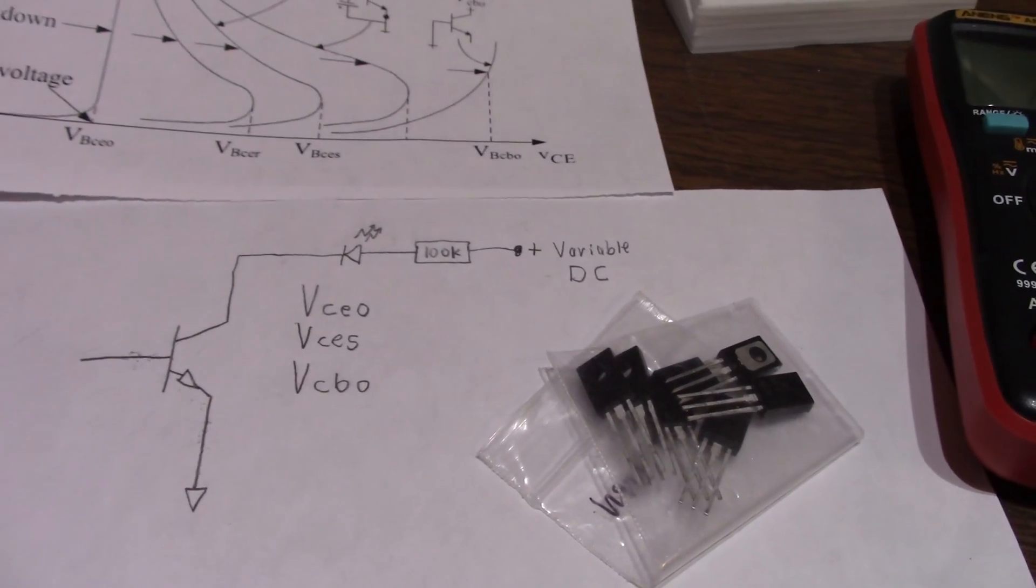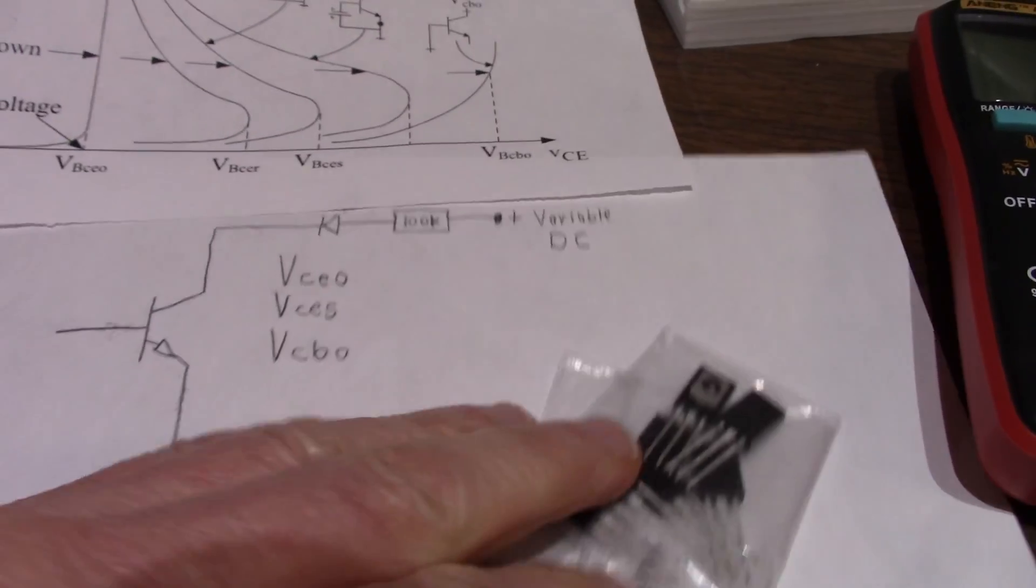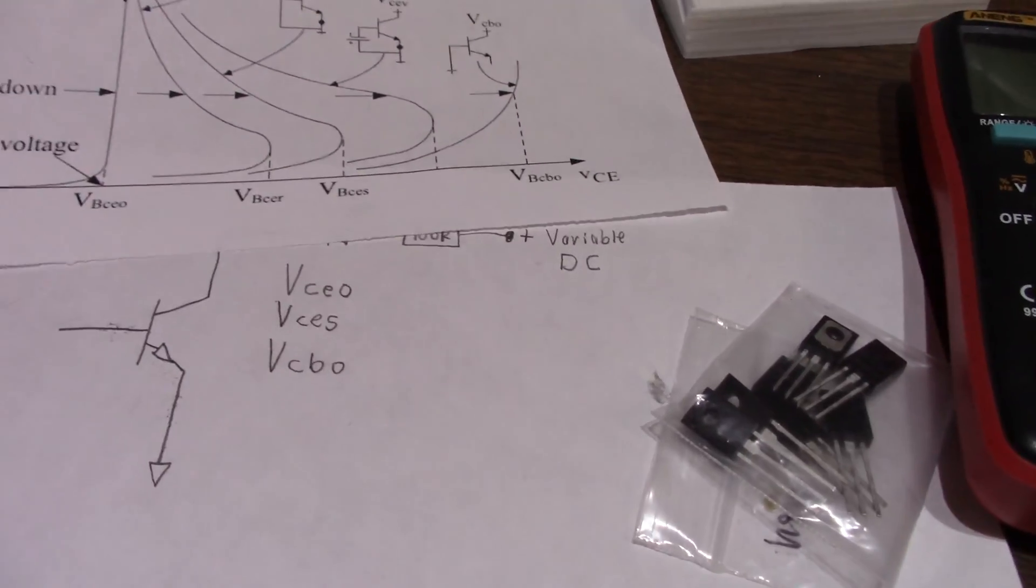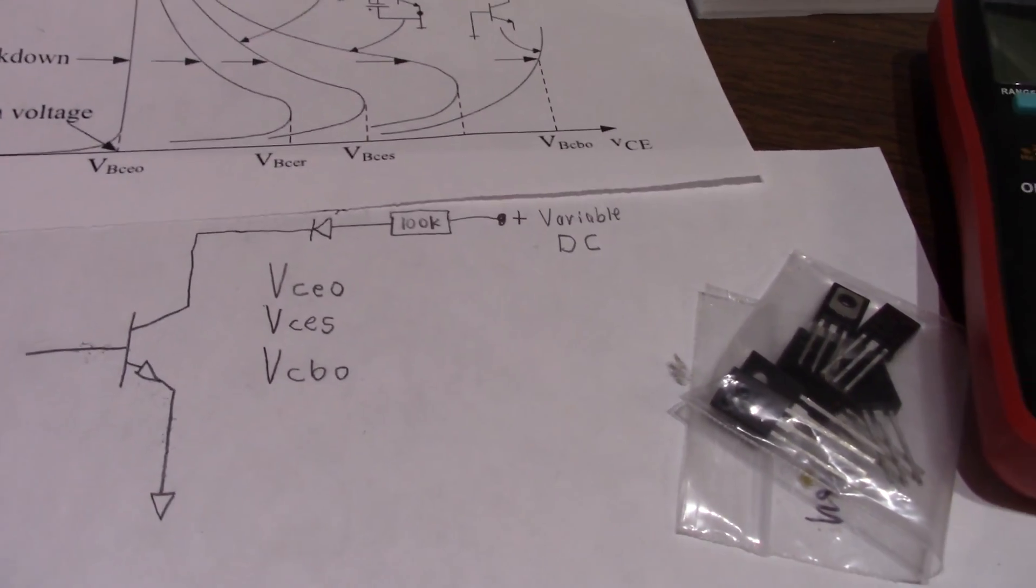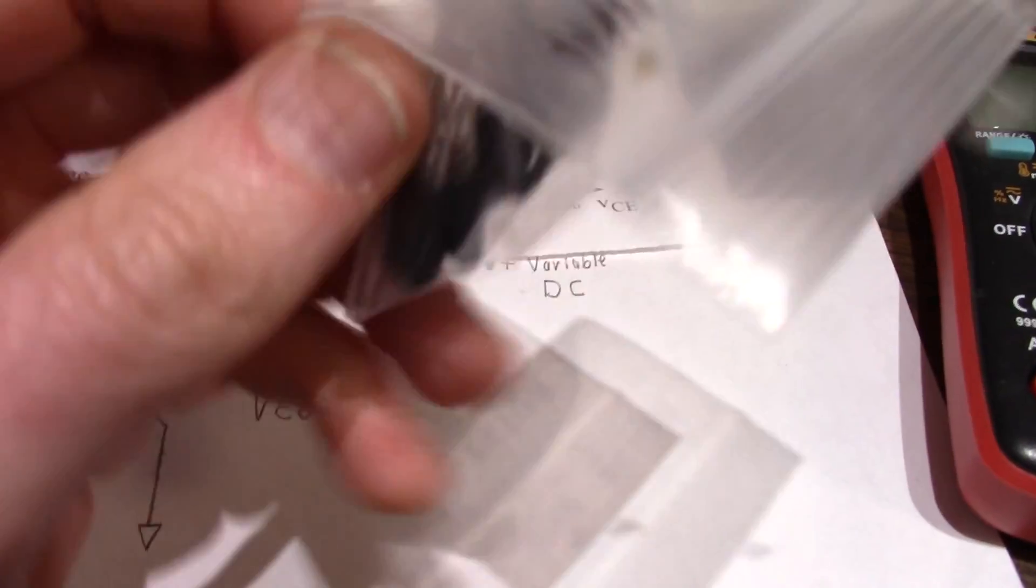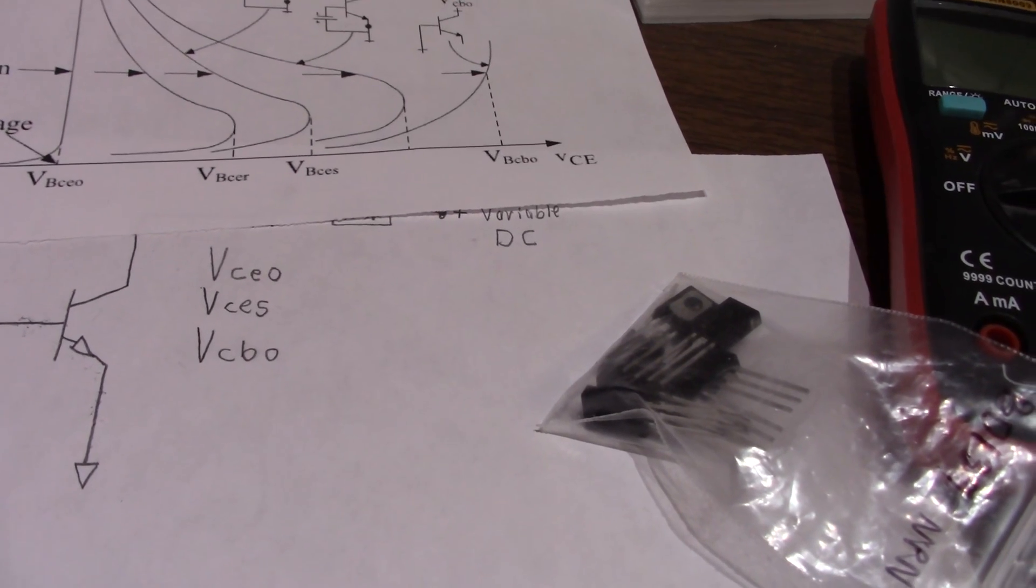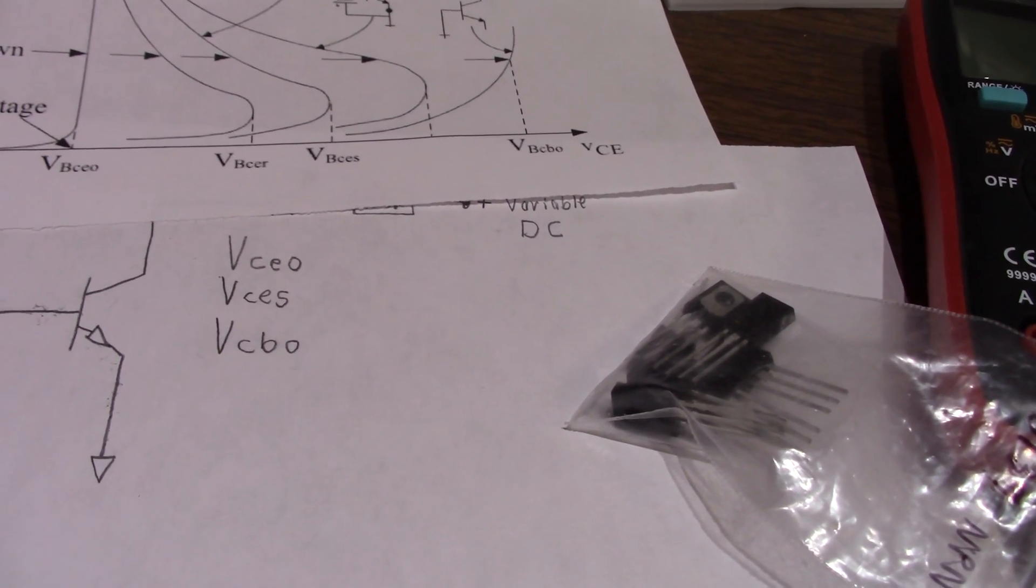So, there you go. A little experiment with transistor breakdown voltages. Didn't damage anything. I didn't want to use my expensive transistors, because I spent quite a few quatlus on those. But, you know, we didn't really damage anything anyway. So, well, I hope you enjoyed it. Thanks for watching. Catch you on the next one.